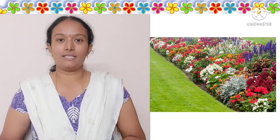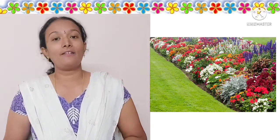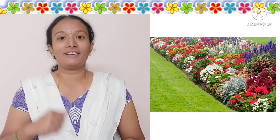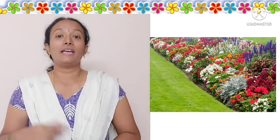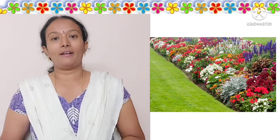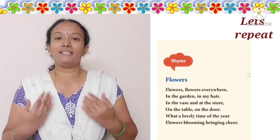Now let us recite a rhyme on flowers. Let me sing it first, then we will repeat it. Flowers, flowers, flowers everywhere, in the garden, in my hair. Flowers, flowers everywhere, in the garden, in my hair. In the walls, at the store, on the table, on the door. What a lovely time of the year, flowers blooming, bringing cheer. Let us repeat it once again.